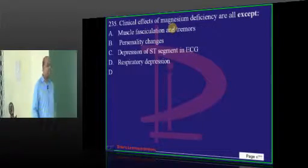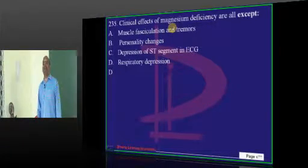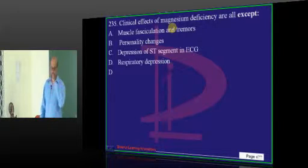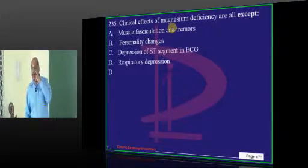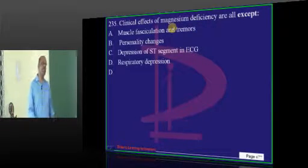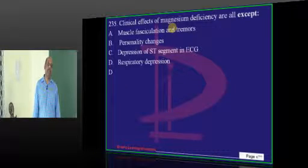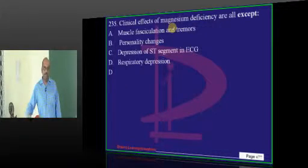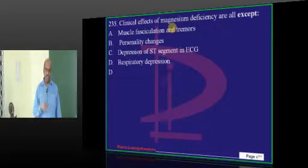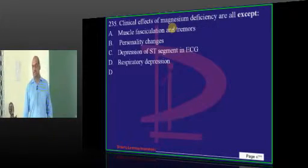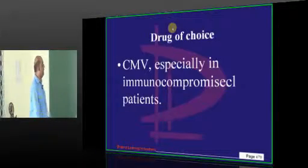It is not magnesium deficiency — it is hypermagnesemia which leads to respiratory depression. That is the reason when you give magnesium sulfate therapy to an eclamptic female, you will check the deep tendon reflexes, you will check the respiratory rate, and you will check the urine output. This is what needs to be remembered.